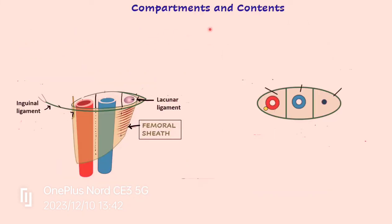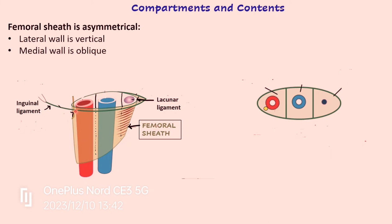The femoral sheath is divided into three compartments. Looking at the shape — it is funnel-shaped but asymmetrical, because its lateral wall is vertical and longer compared to the medial wall which is shorter and oblique. The femoral sheath is open above to allow passage to femoral vessels and lymphatics, but closed below because the anterior and posterior walls merge with the adventitia of the femoral vessels.